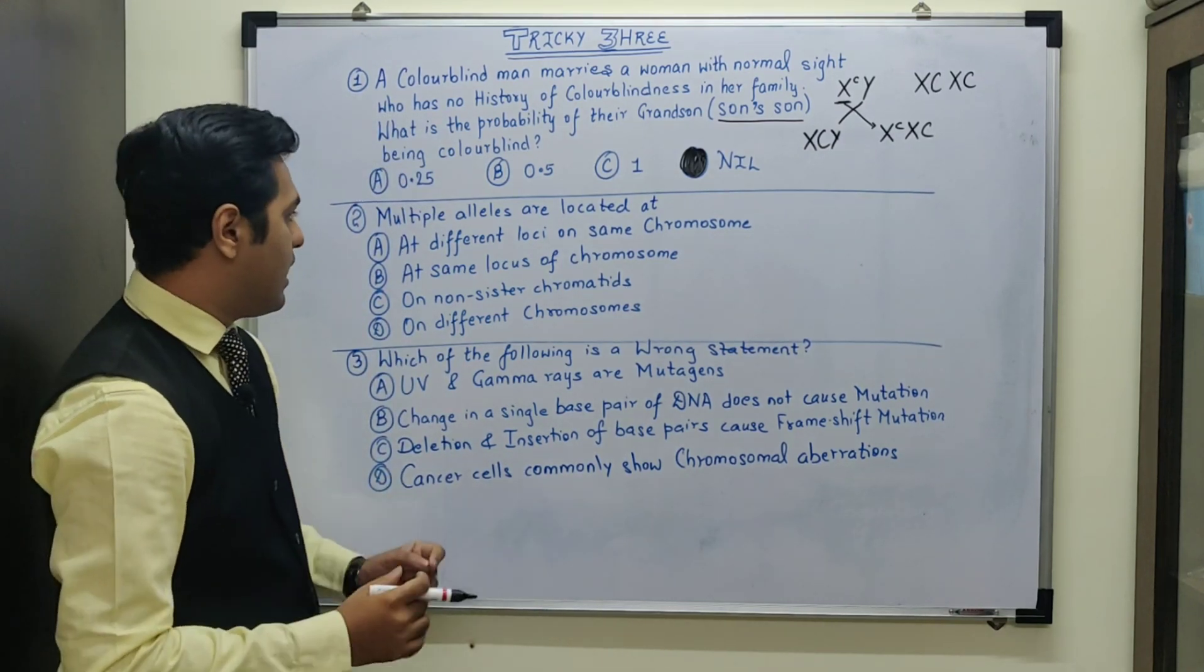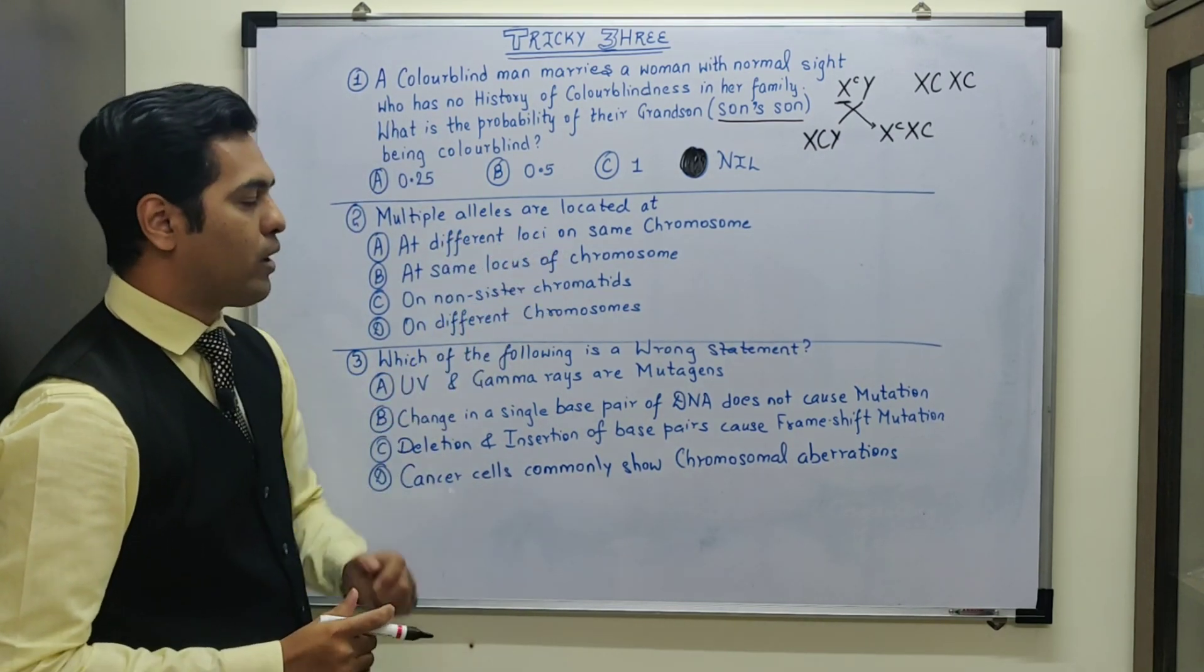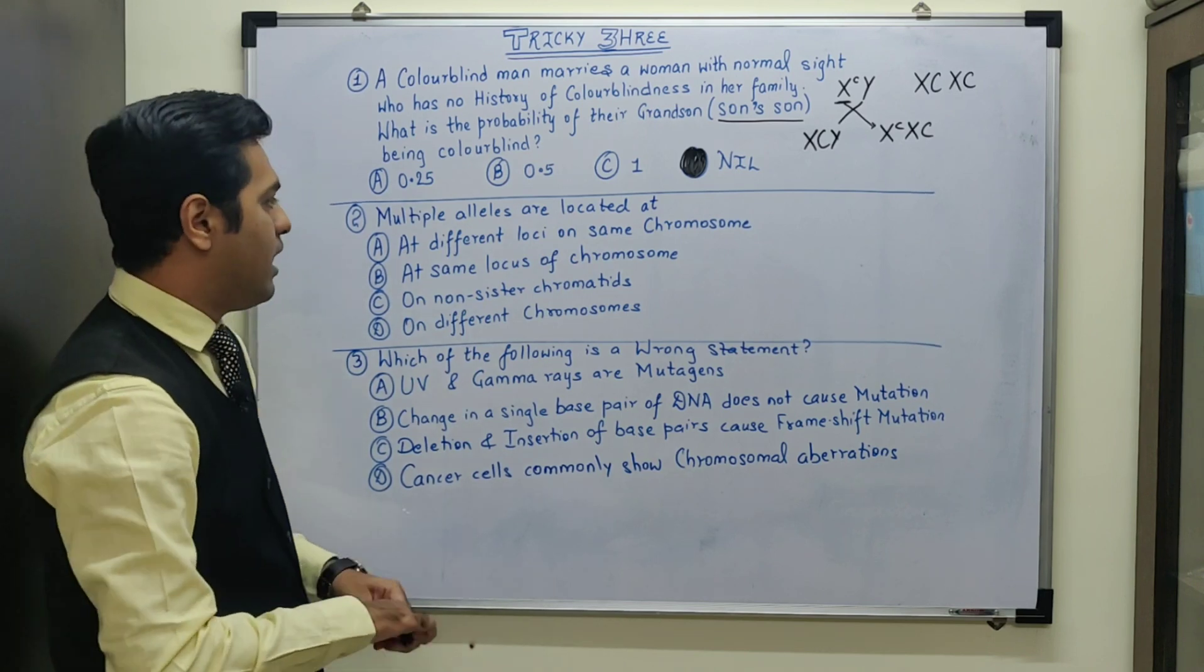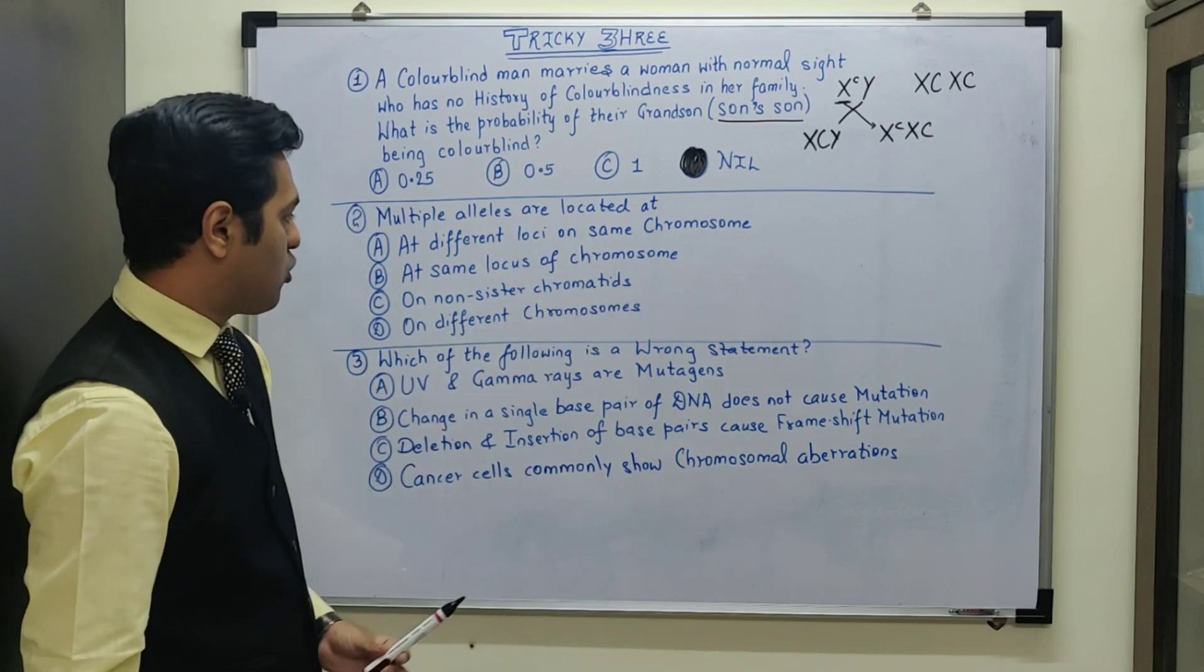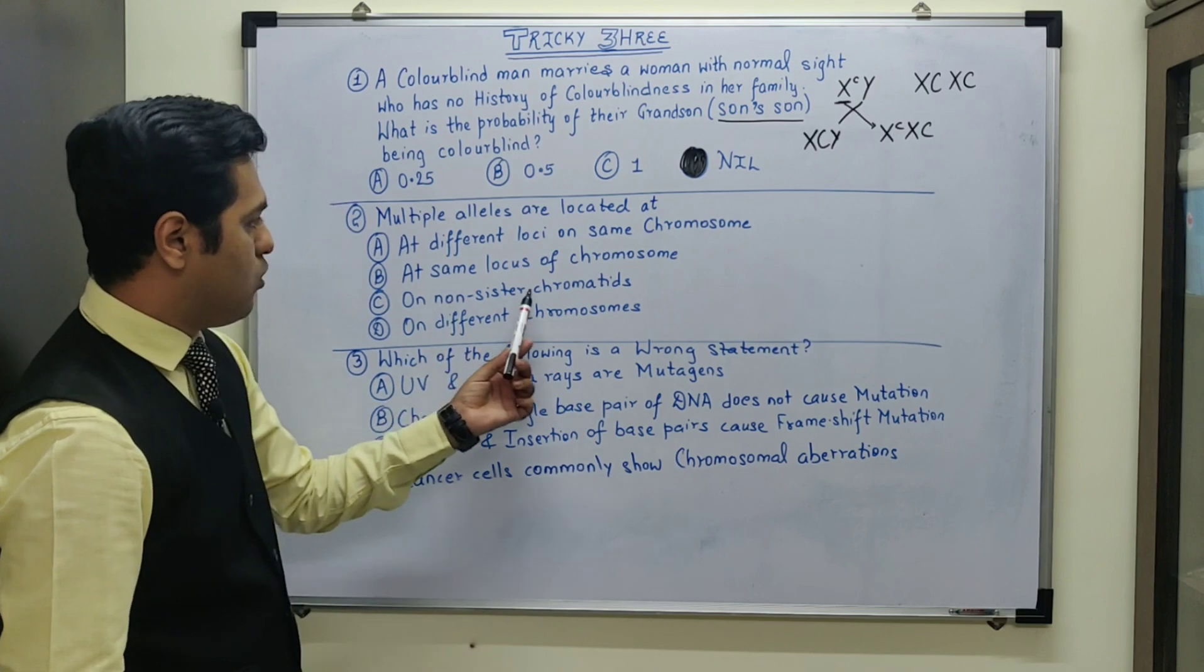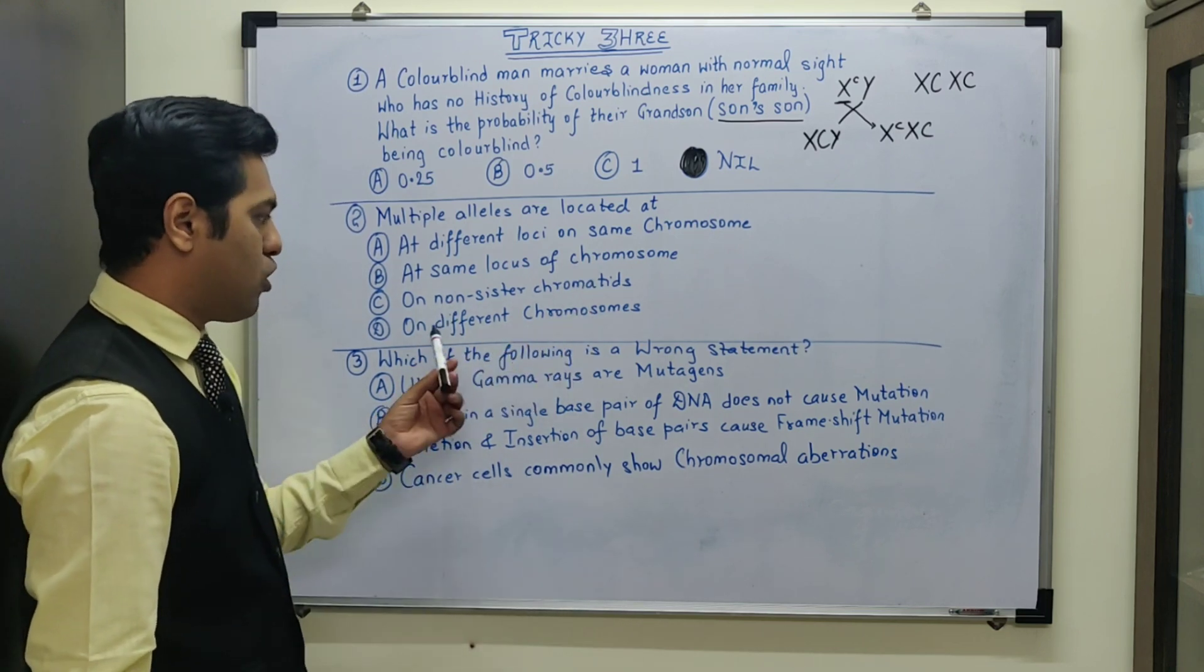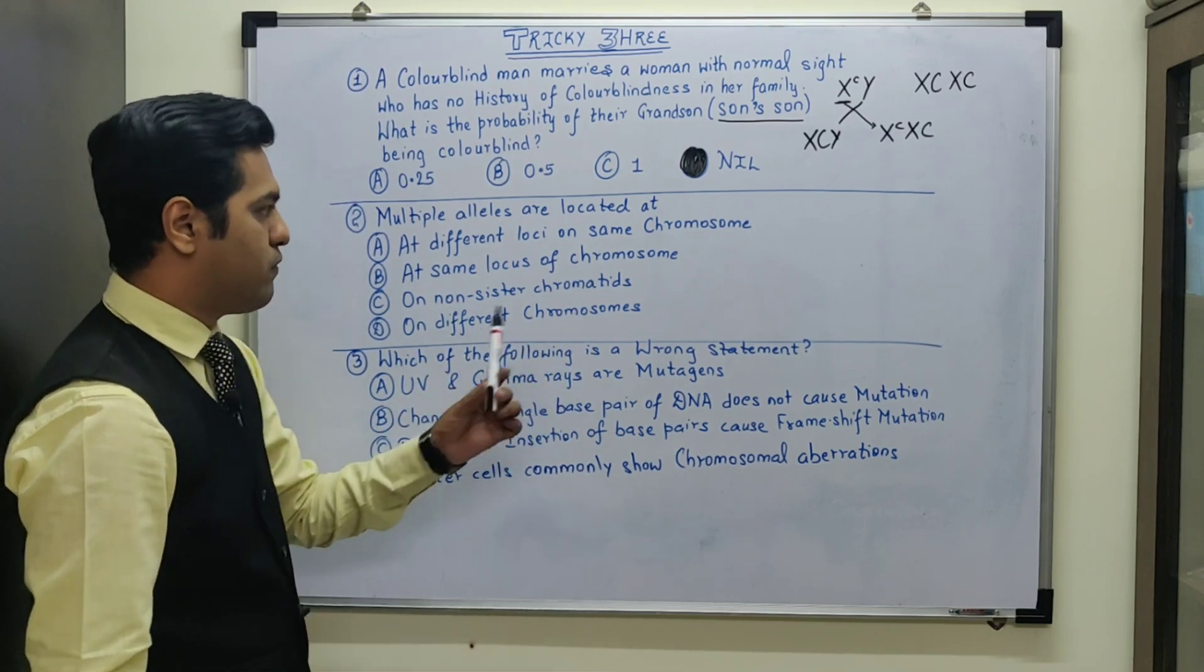Moving to the next MCQ: multiple alleles are located at whether it is at different loci on same chromosome, at same locus of a chromosome, on non-sister chromatids, or on different chromosome.